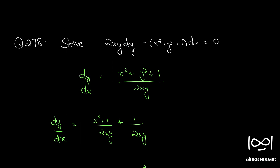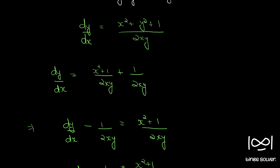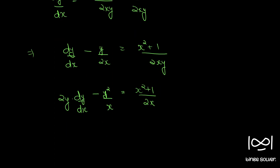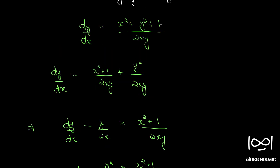I made a mistake — there was a y squared term here. So the term becomes y squared over x when you multiply throughout by 2y. Opening up x squared plus y squared plus 1, there was a y squared term I missed. Sorry about that.